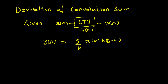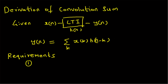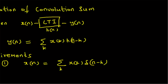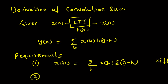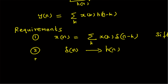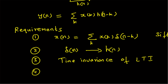To derive the convolution sum, we need a few definitions and properties. The first requirement is the shifting property: x(n) equals the summation over k of x(k) delta(n minus k). The second is the definition of impulse response — when you send delta(n) through the LTI system you get h(n). The third is the time invariance property, and the fourth is the superposition principle, which is part of the linearity property.